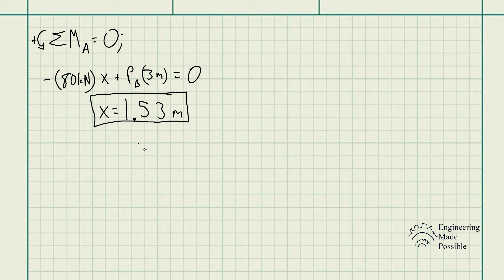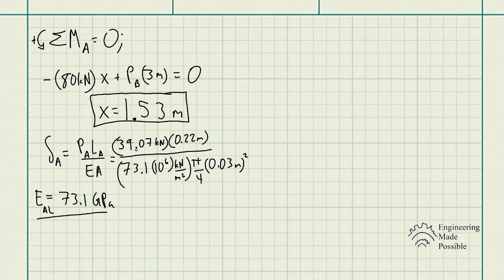Now, the second question that asked us was what was the new diameter of cylinder A? So in this case, we have the force in cylinder A. So we have the deformation. The force in cylinder A is 39.07 kN. The length of it converted into meters is 0.22 meters. And in this case, we have the modulus of elasticity. Usually you could get it from a table in your book.